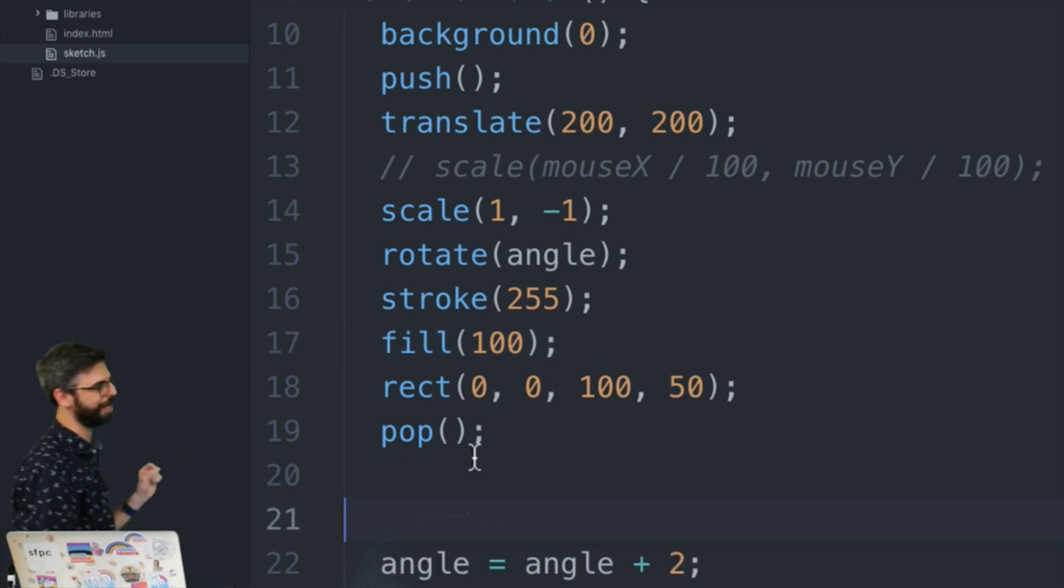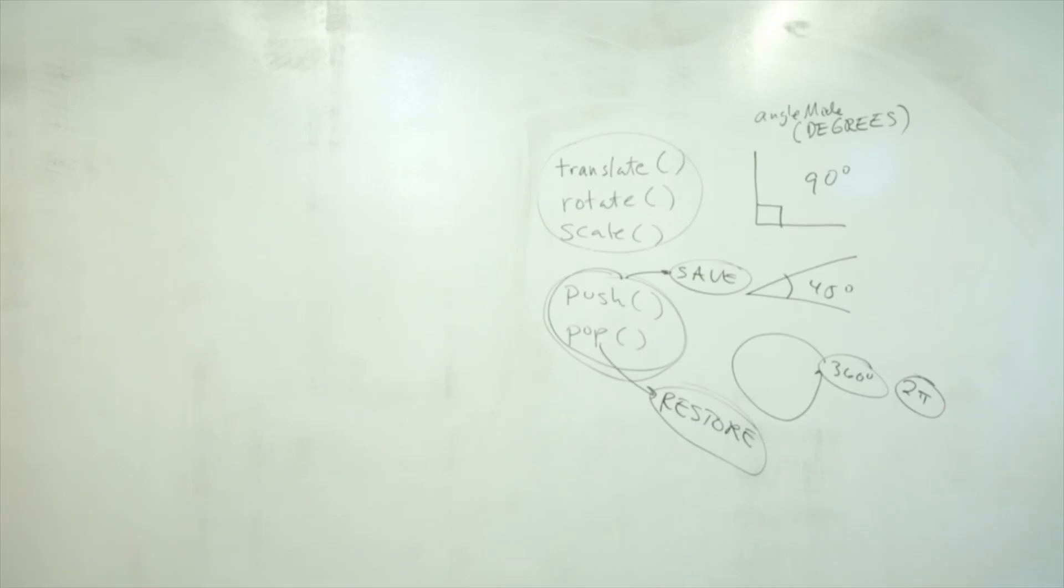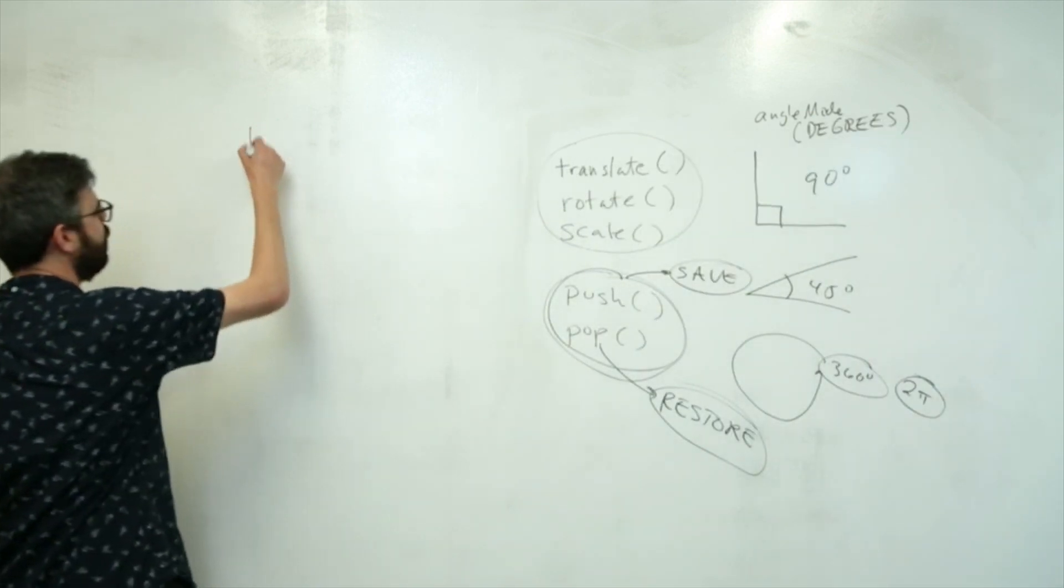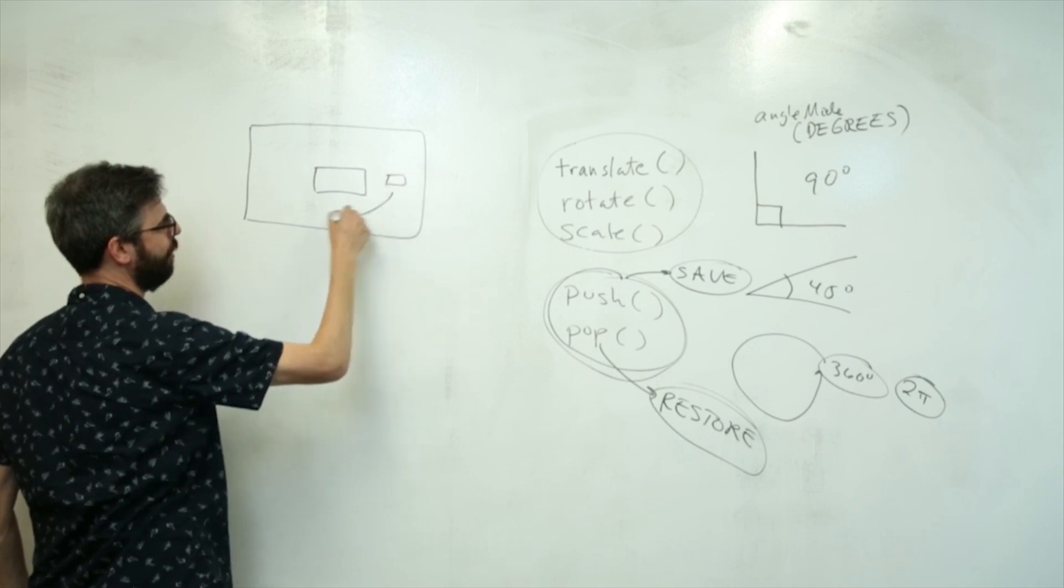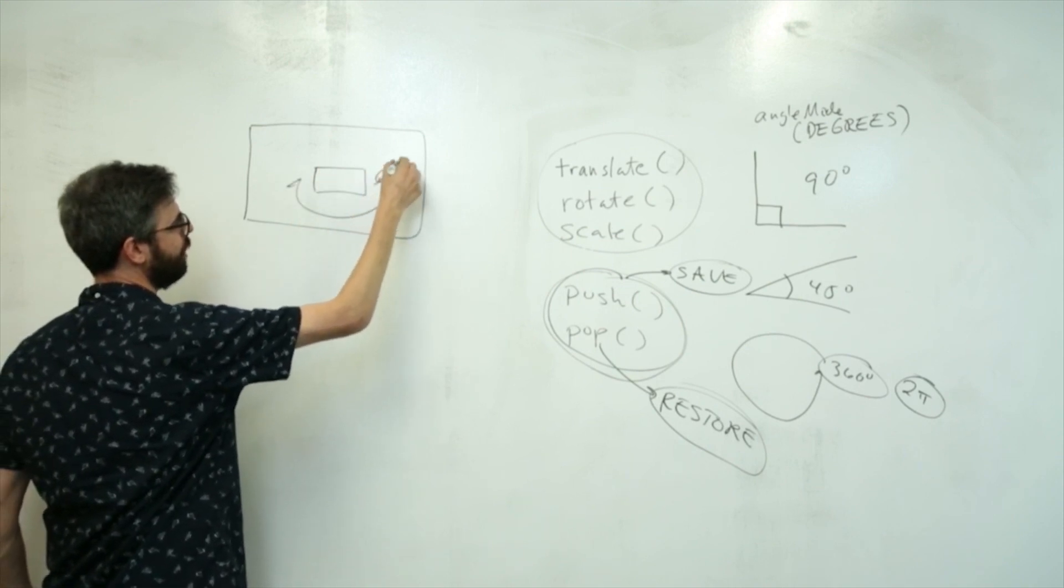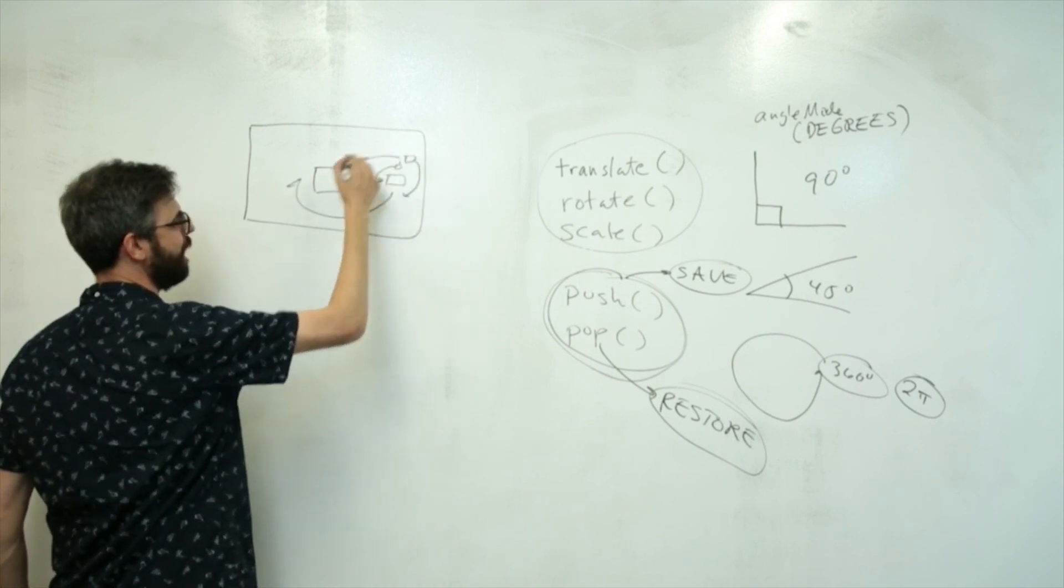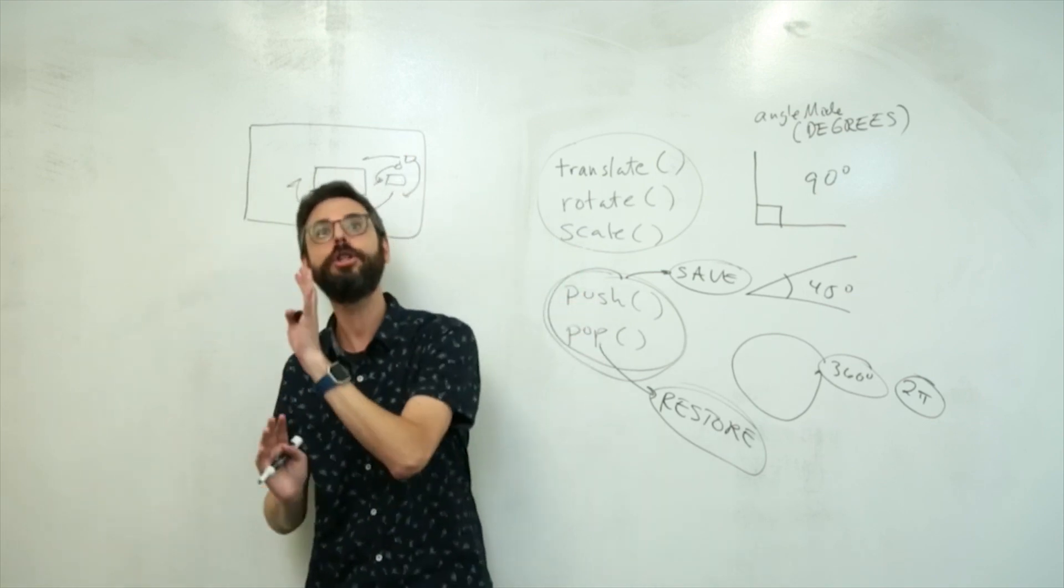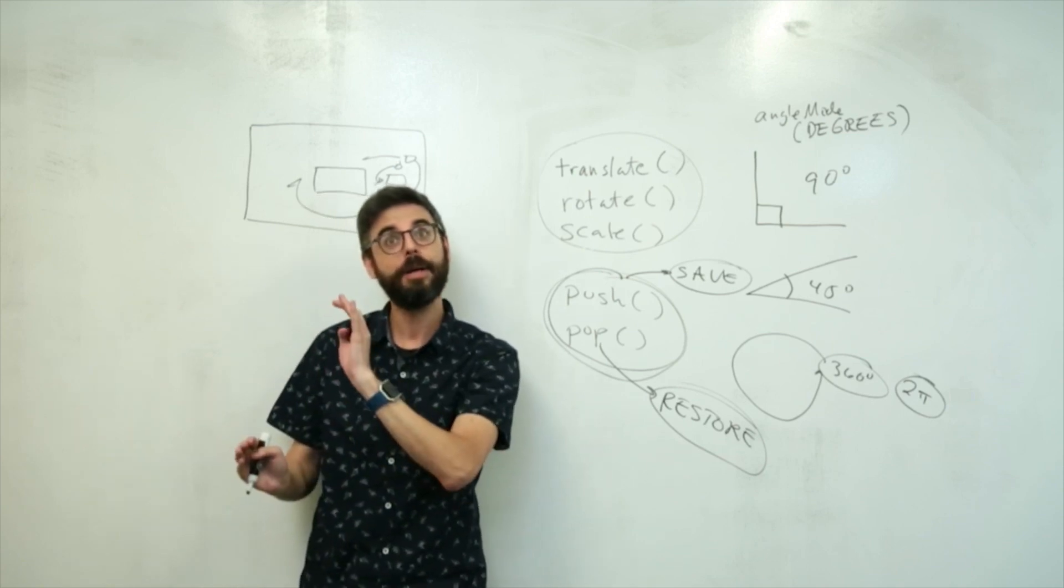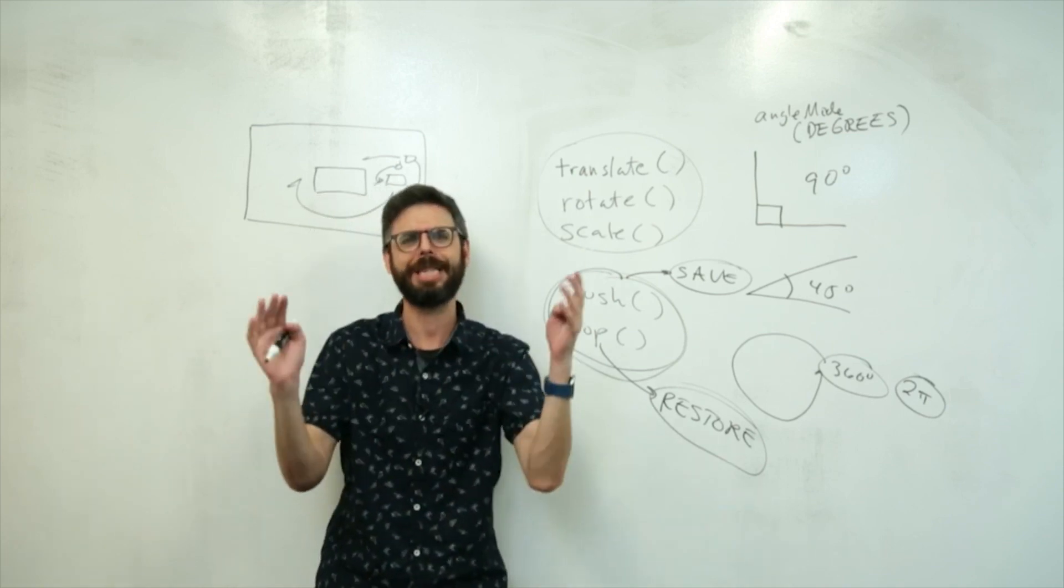Now, the other thing that I want to mention is that you could imagine a more complex scene where this thing is rotating around this thing, and this other thing is rotating around this thing, but this other thing is rotating around this thing, but not this thing. And you start needing to say, push, draw some stuff, push, draw some stuff, push, draw some stuff, pop, draw some stuff, pop, pop, or something like that.